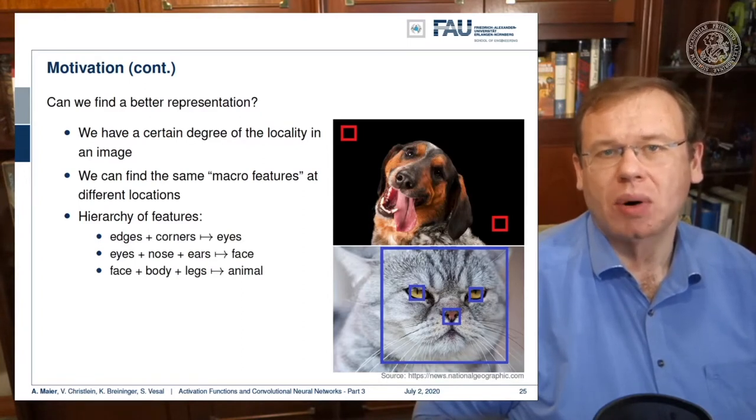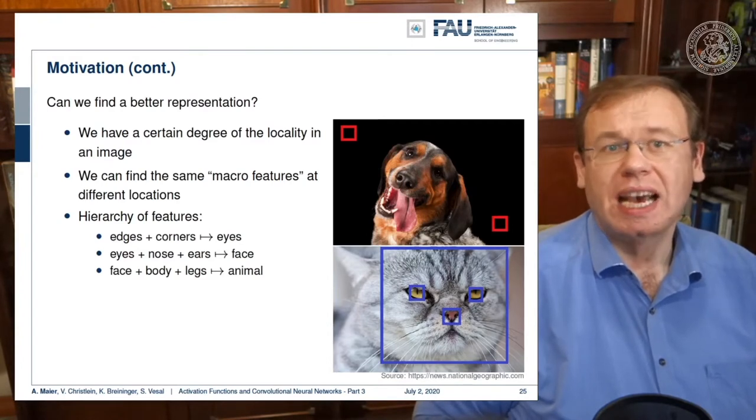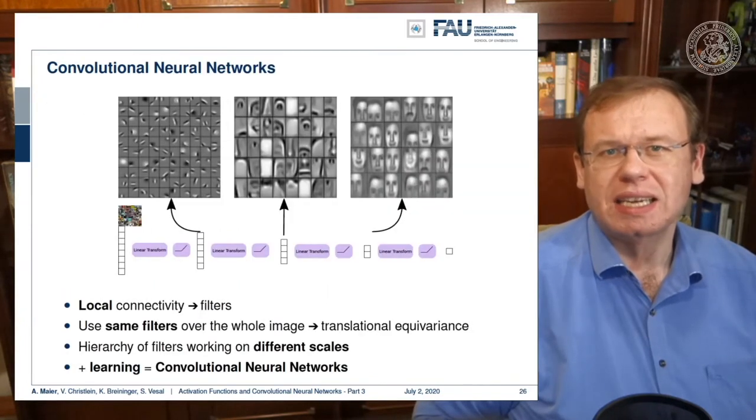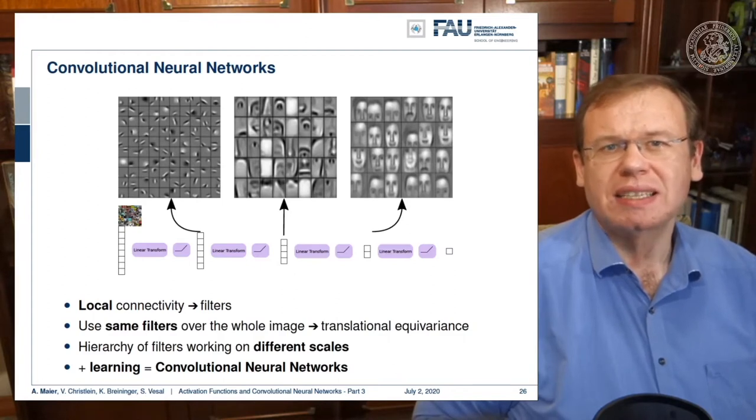Ideally we want to construct something like a hierarchy of features where we have edges and corners that then form eyes, then we have eyes, nose, and ears that form a face, and then face, body, and legs will finally compose an animal.